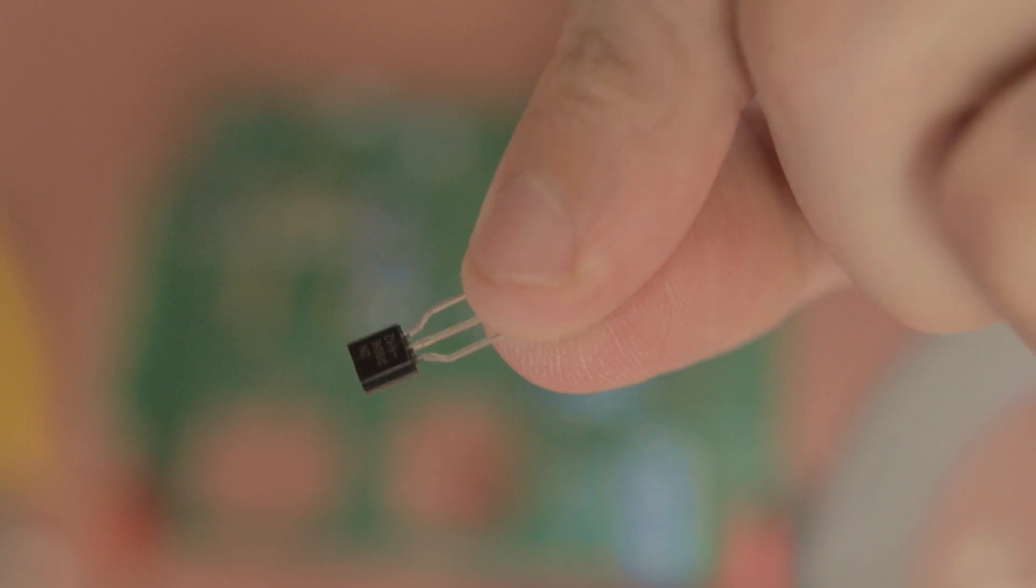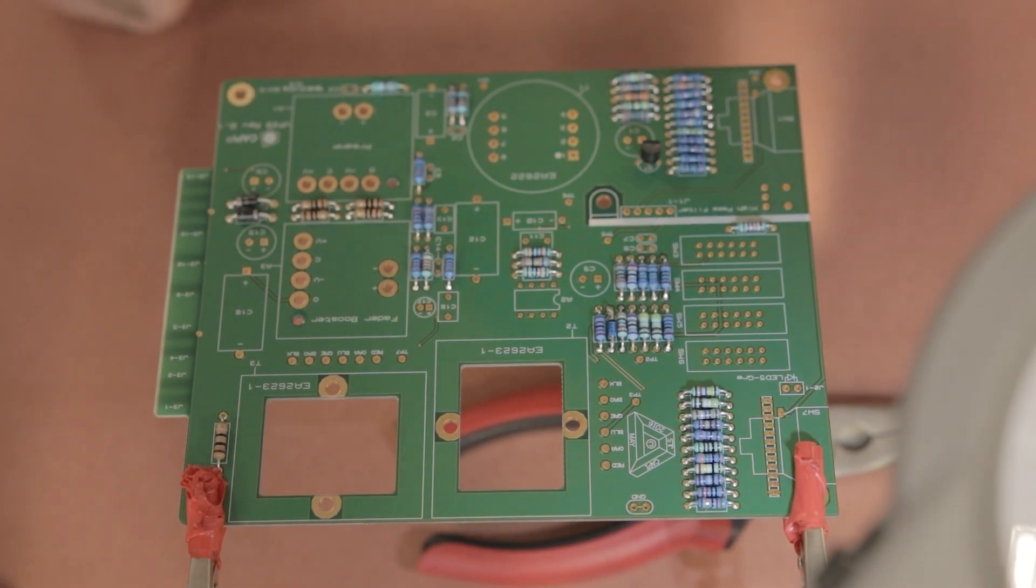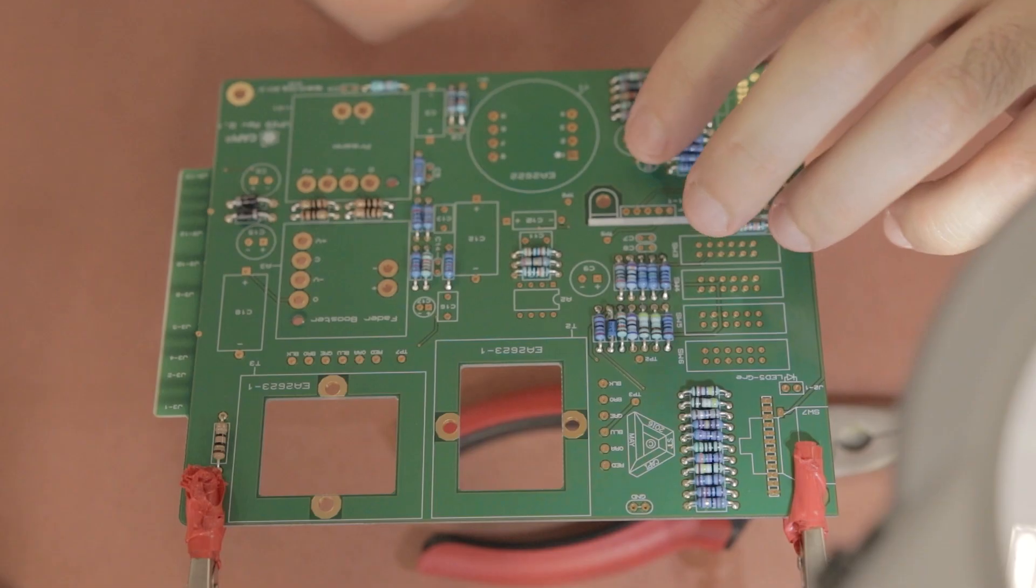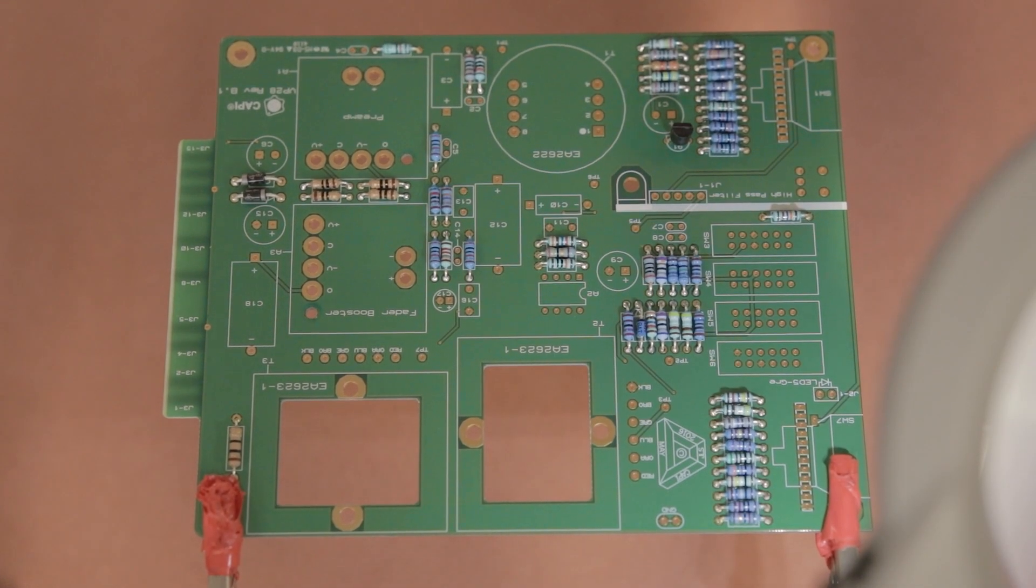Then you want to get this little transistor and put it in place on the board. That's pretty simple, just make sure that the orientation is correct, that the semicircle shape lines up with the semicircle shape of the transistor itself.